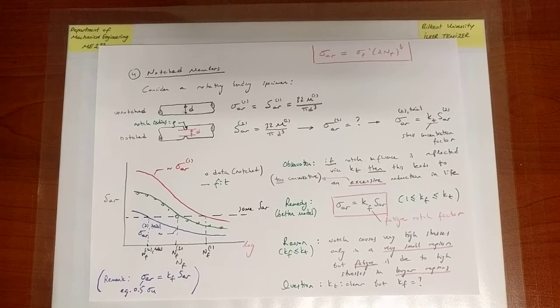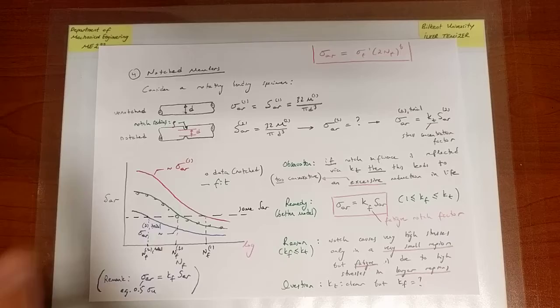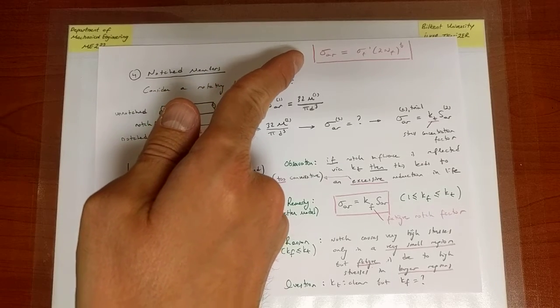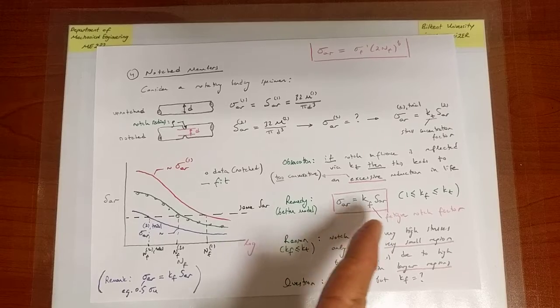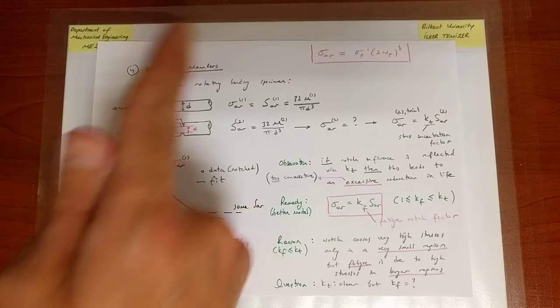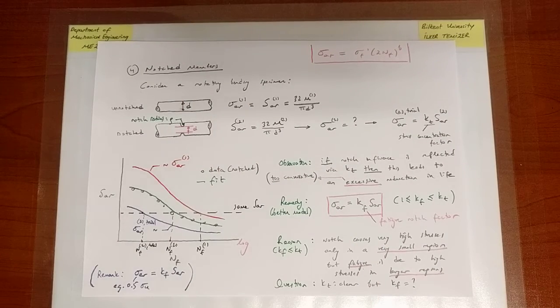We are discussing the idea of the fatigue notch factor, which allows us to make better predictions of reductions in life when there is a notch in the specimen. The idea is to fall back to the Basquin equation by using a correct relation between the nominal stress and the point stress through a fatigue notch factor.